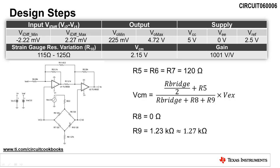The first design step is to set the bridge resistors R5, R6, and R7 equal to 120 ohms to match the nominal resistance of the strain gauge.